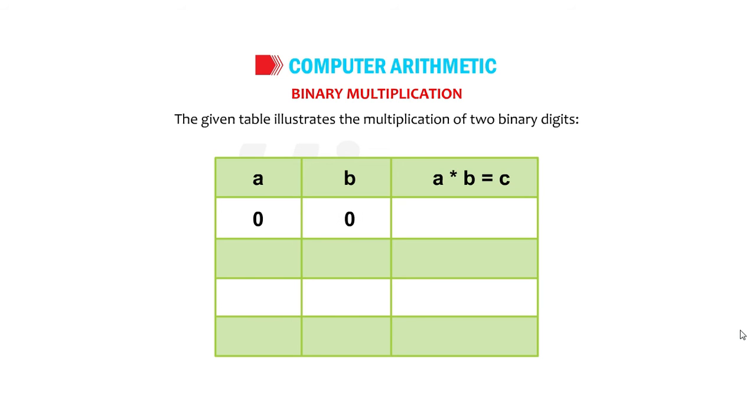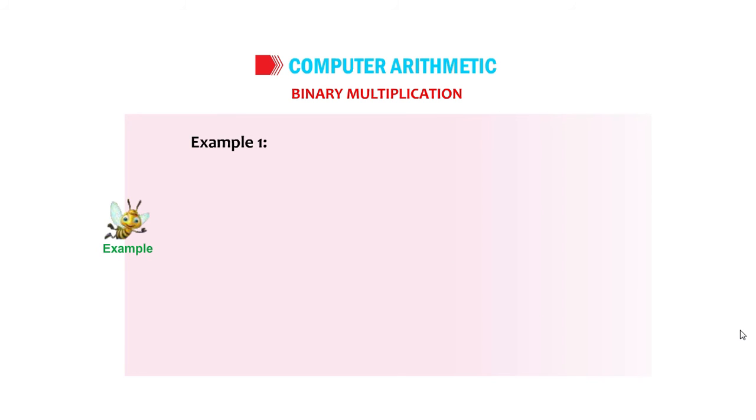A: 0, B: 0, A into B equals C: 0 into 0 equals 0. 0, 1, 0: 1 into 0 equals 0. 1, 1: 1 into 1 equals 1.